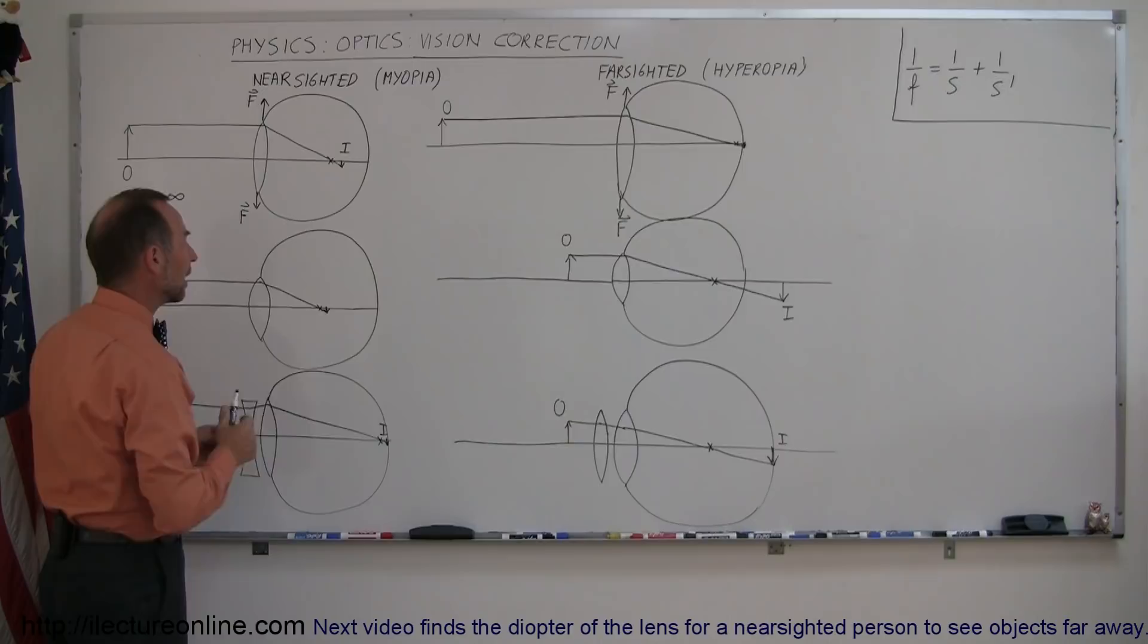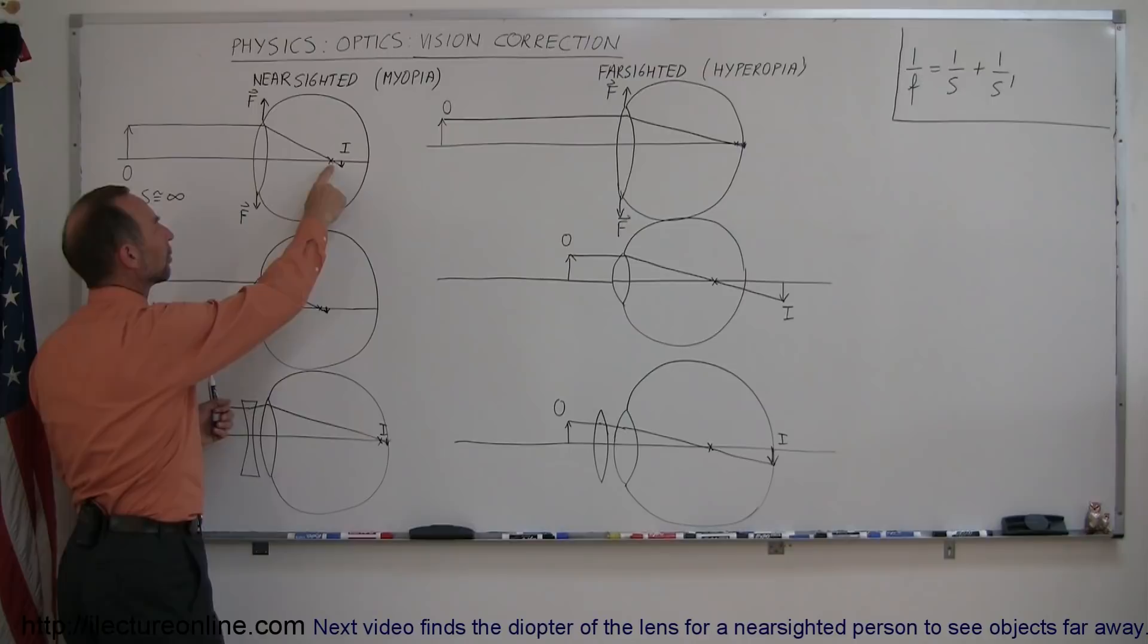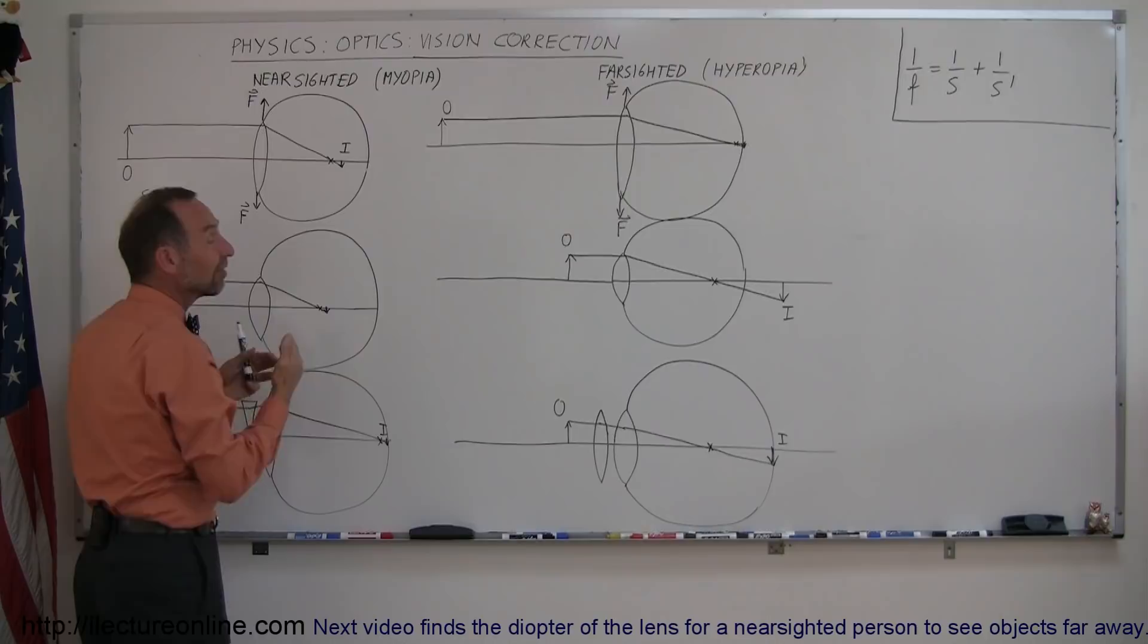So if a nearsighted person, the farthest back that the focal point can be is in front of the retina and not far enough back, there really isn't anything else that person can do.